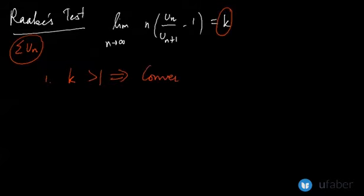Second, if the value for k is less than 1, then the series will be divergent.